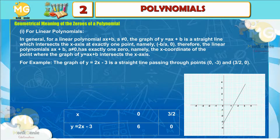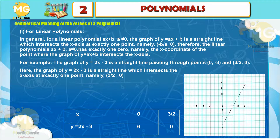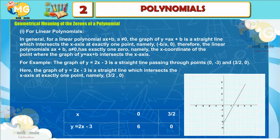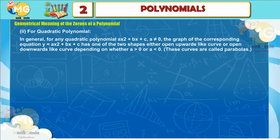For example, the graph of y = 2x − 3 is a straight line passing through points (0, −3) and (3/2, 0). The graph of y = 2x − 3 is a straight line which intersects the x-axis at exactly one point, namely (3/2, 0).